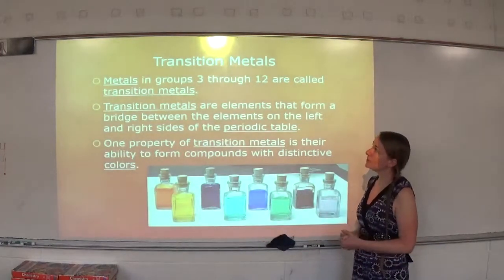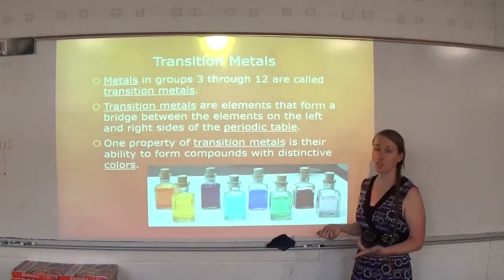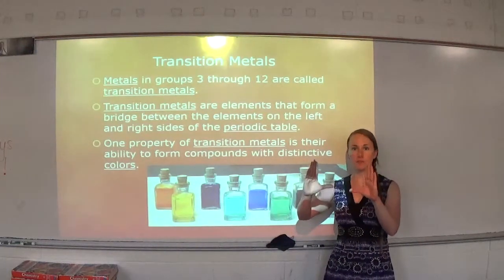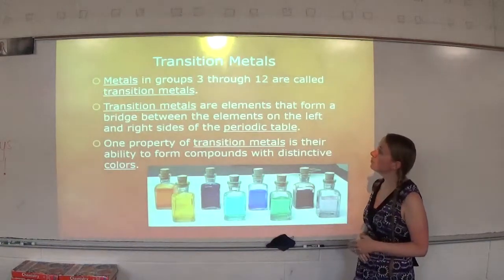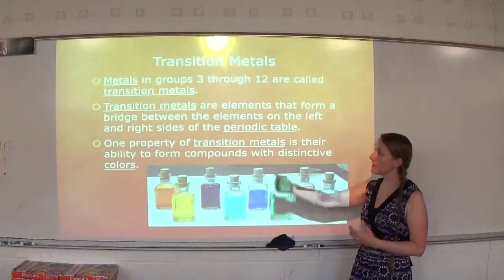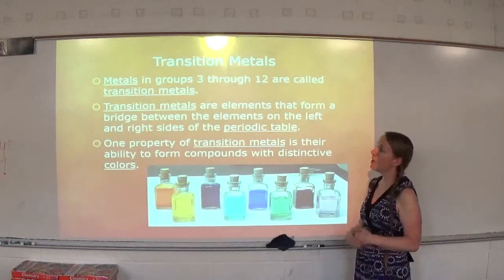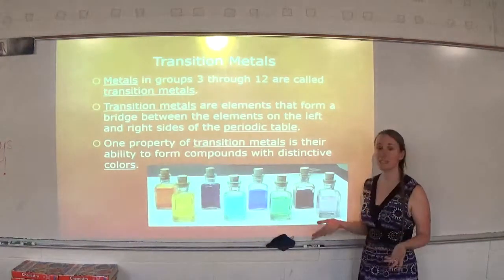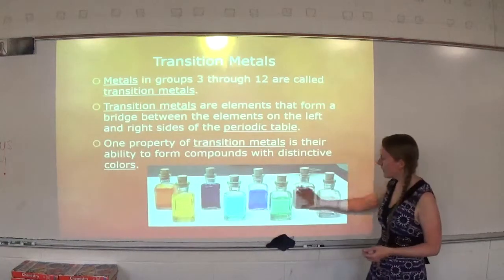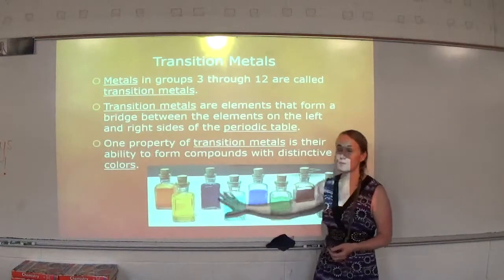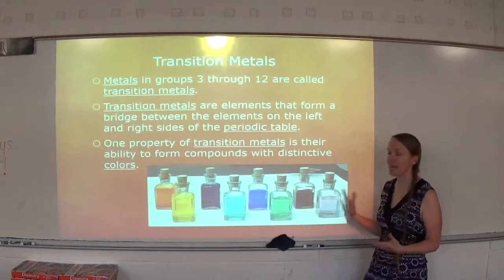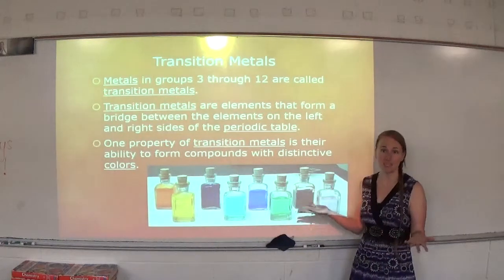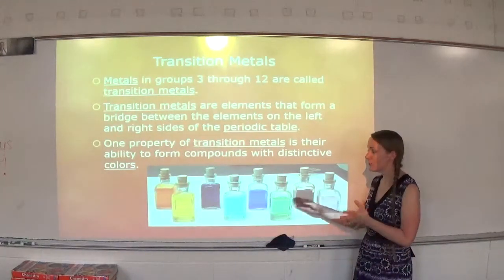Transition metals — metals in groups 3 through 12 — are that long, thin area in the middle of the periodic table. Transition metals are elements that form a bridge between elements on the left and right sides of the periodic table. One property of transition metals is their ability to form compounds with distinctive colors — there are little vials filled with different transition metal compounds showing lots of different colors. Transition metal compounds are used in paints and dyes, which helps give those bright colors.